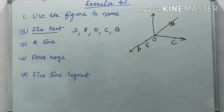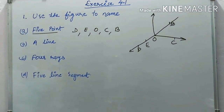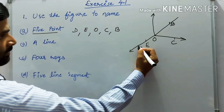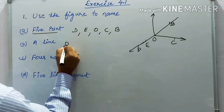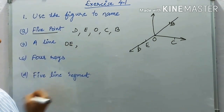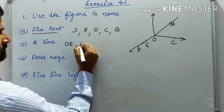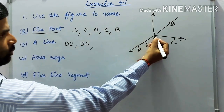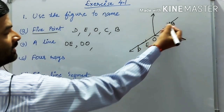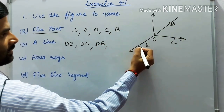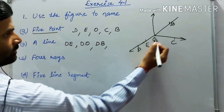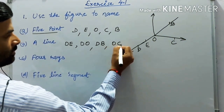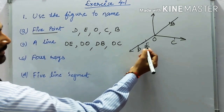Next, name the lines in the figure. A line is the shortest distance between two points extended on both sides. The lines from the figure are: DE, DO, DB, OC, and EO.